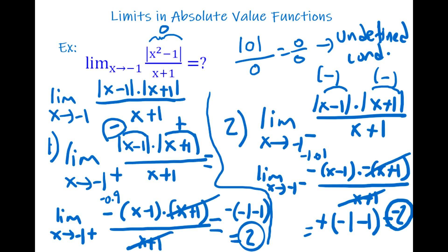When x goes to −1 from the right, the limit is +2. When x goes to −1 from the left, the limit is −2. Because the left limit is not equal to the right limit, there is no limit in this question.